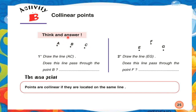Let's move to Activity B on page 25, about collinear points. I will start with question number one. I have three different points: A, B, and C. They ask me to draw line (A, C), so I join A with C to get this line. Does this line pass through point B? Of course it does. So A, B, and C are collinear points because they are located on the same line.